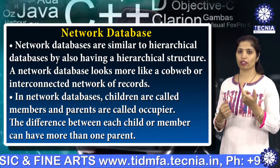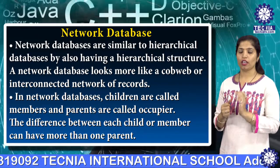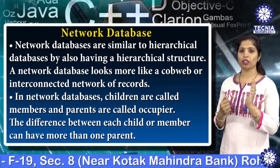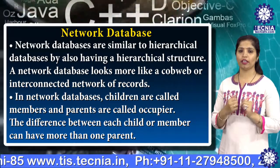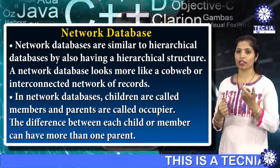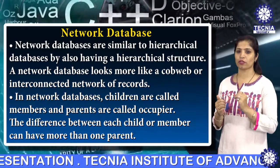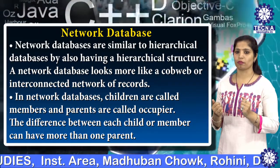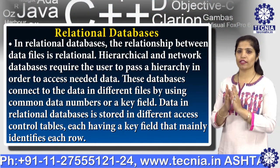A network database looks more like a cobweb or interconnected network of records. In network databases, children are called members and parents are called owners. The difference is that each child or member can have more than one parent. Some data is more naturally modeled with more than one parent per child. The network model allows the modeling of many-to-many relationships. It is similar to the hierarchical model, but instead of a single-parent tree hierarchy, it uses set theory to provide a tree-like hierarchy where child tables are allowed to have more than one parent.